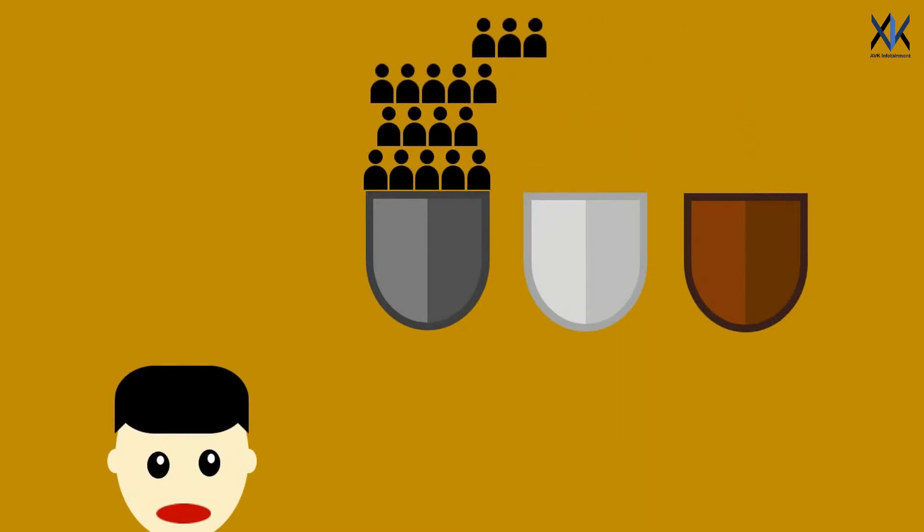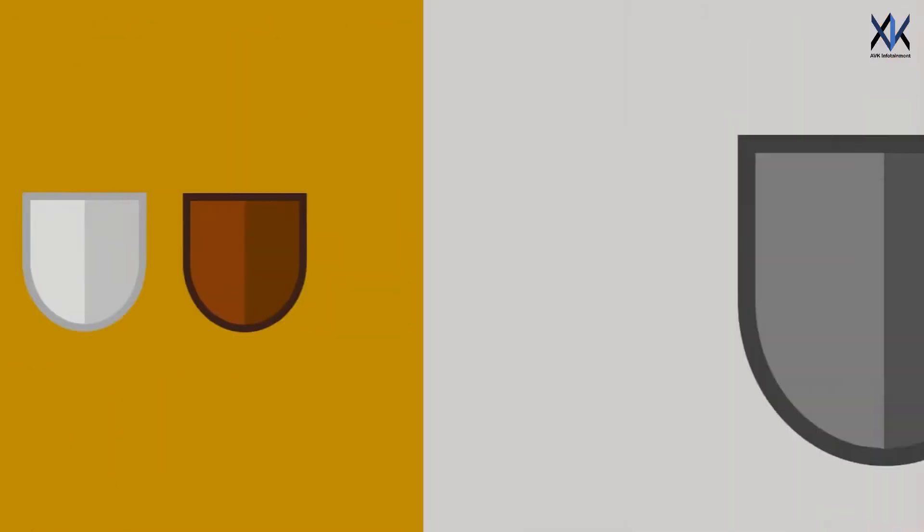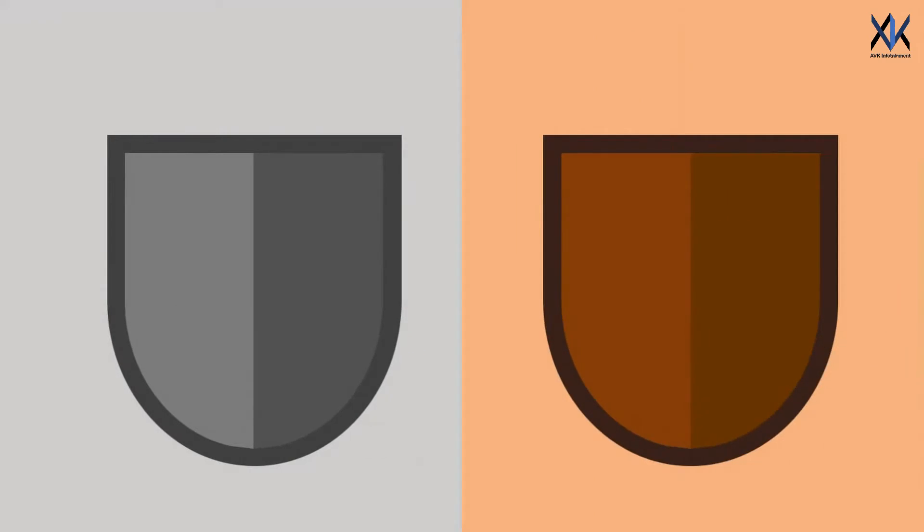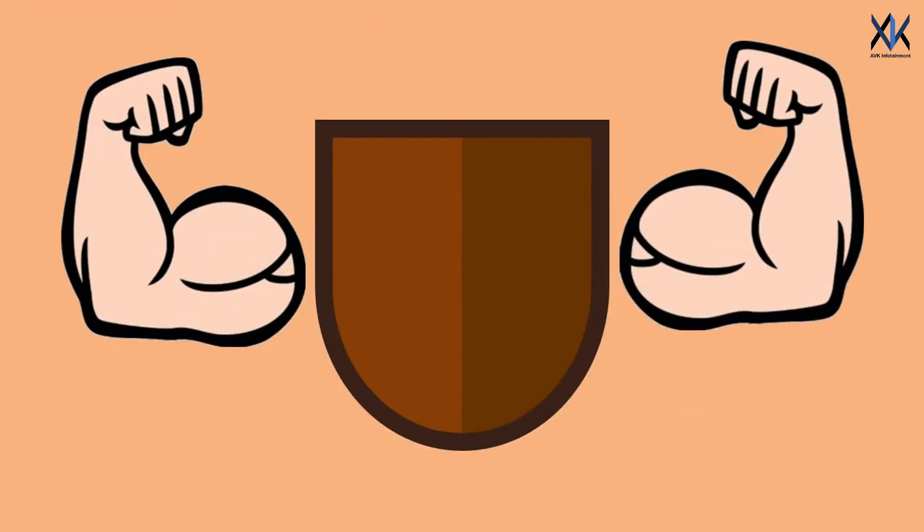Now definitely all of you will go for the metal shield, if you want to live. Because for obvious reasons, the tensile strength of metal will be more than wood, so it will absorb the impact better than wood. But what if we say that we have actually created a bulletproof wood.